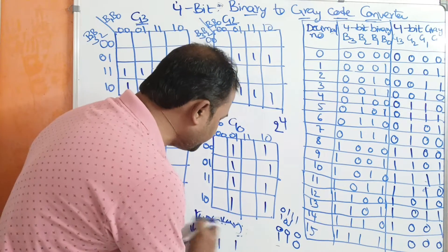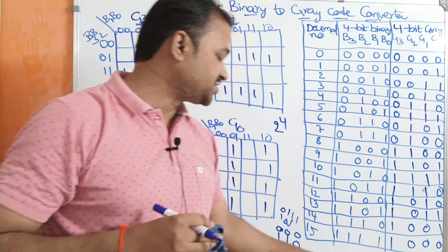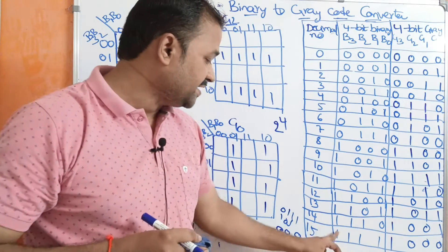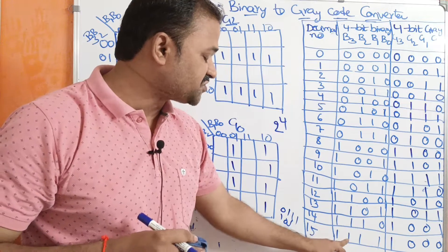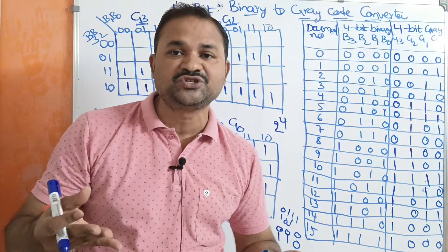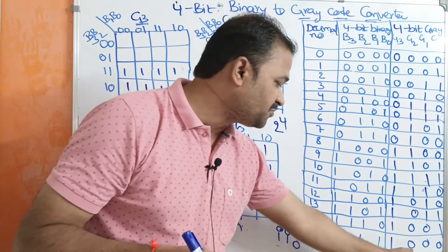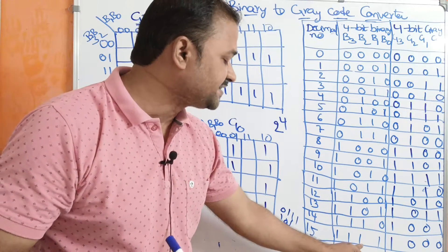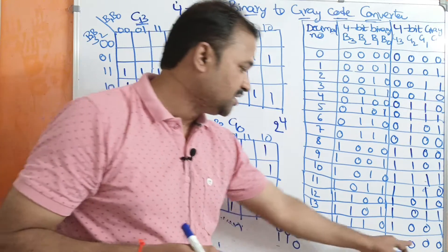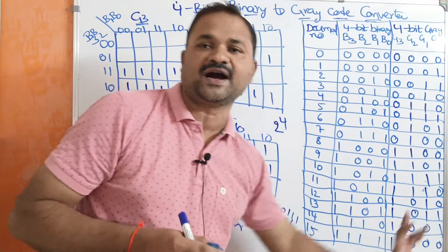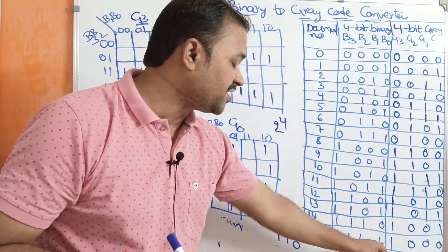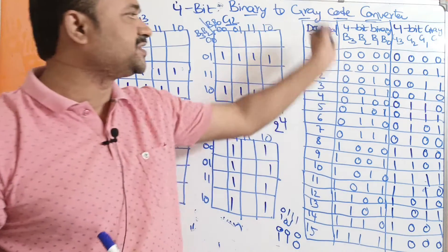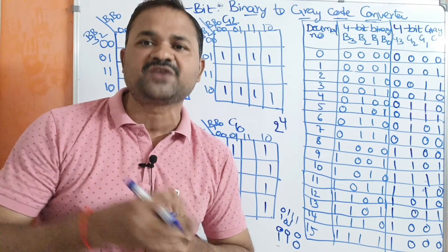Let us take the last number — all 1s, that is 1111. We write the first bit as it is: 1. XOR of 1 and 1 is 0. XOR of 1 and 1 is 0. XOR of 1 and 1 is 0. So the gray code for 1111 is 1000. In this way we can get the gray code for any binary number very easily.